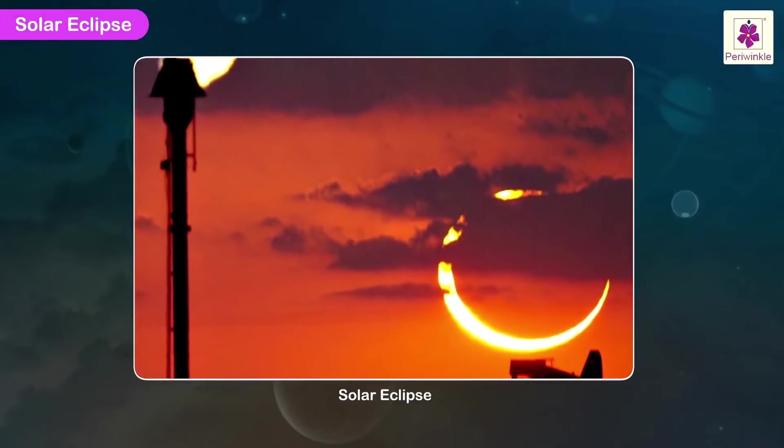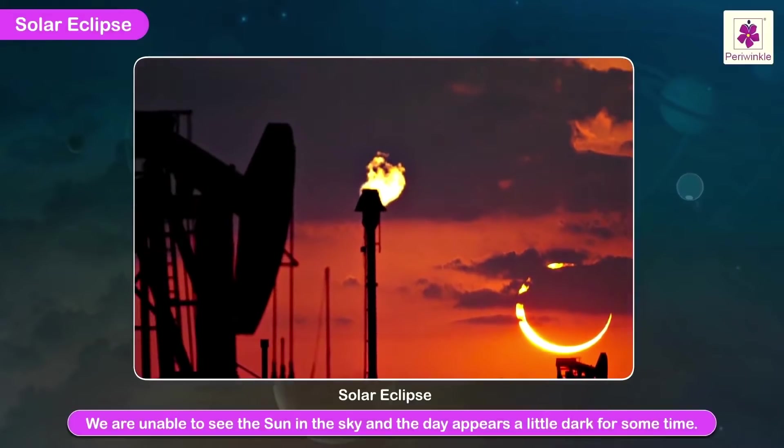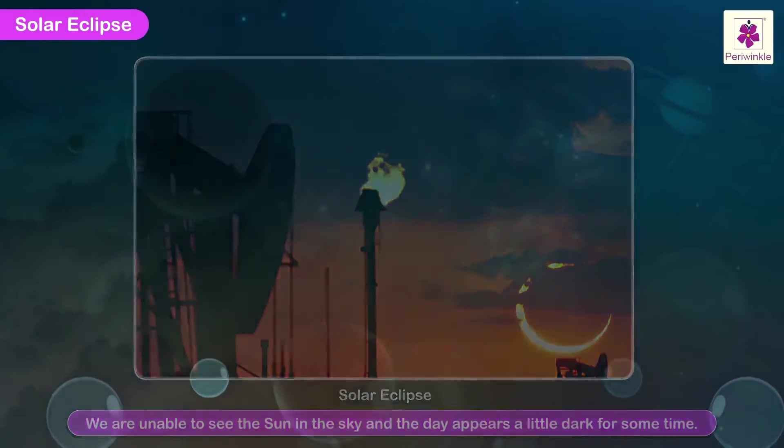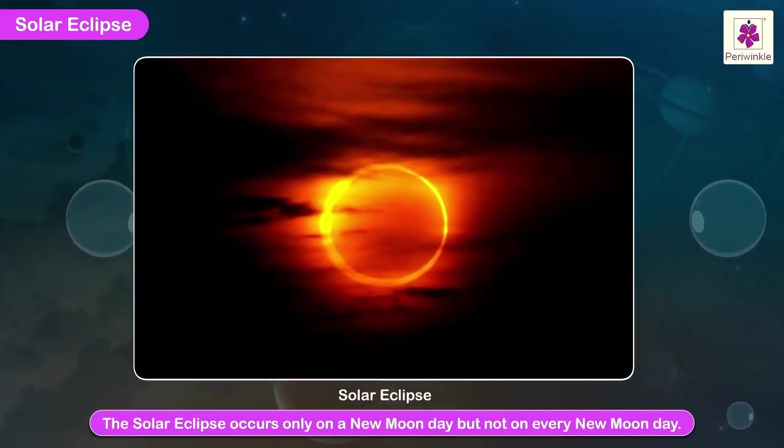During the solar eclipse, we are unable to see the Sun in the sky, and the day appears a little dark for some time. A solar eclipse can last for around 7 minutes and 31 seconds. The solar eclipse occurs only on a New Moon day, but not on every New Moon day.